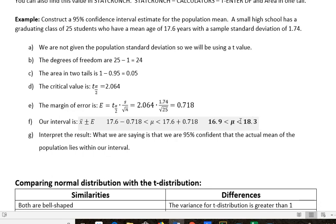And in the middle is μ, because we're estimating the population mean, which we represent with μ. So this says we believe that the population mean lies between 16.9 and 18.3.